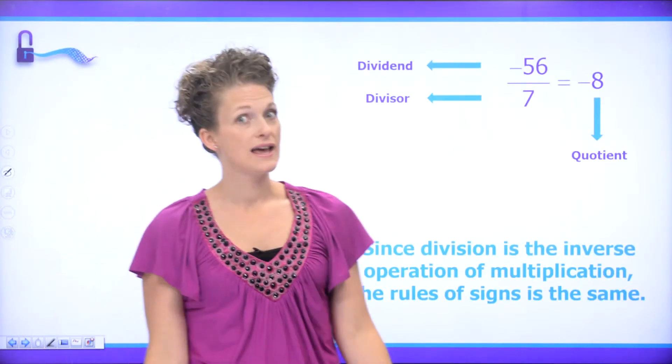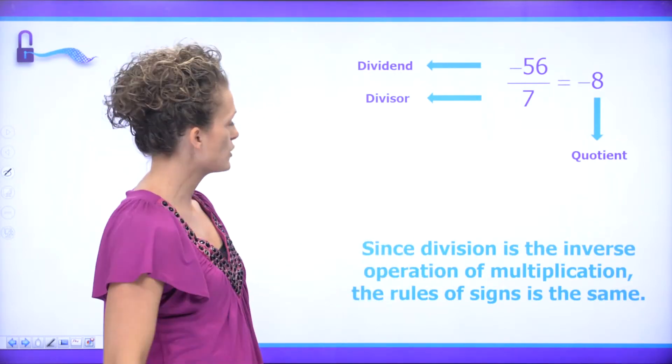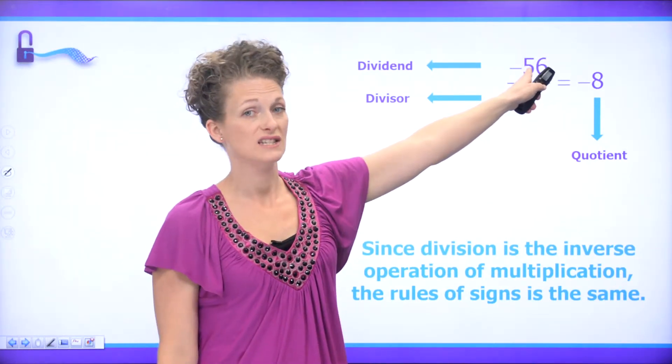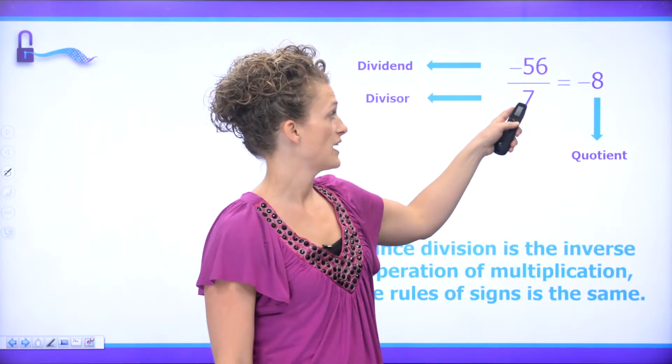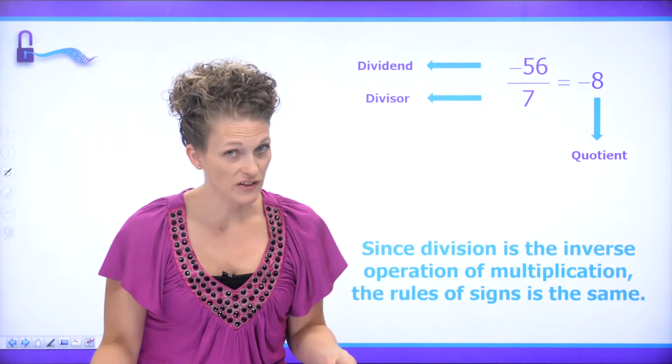So again, mathematicians and their special names, this is no exception. The number that is going to be divided is called the dividend, the number that you're dividing by is called the divisor, and the result of that division is called the quotient.